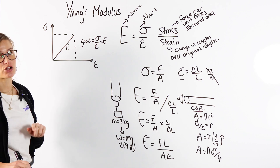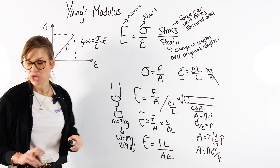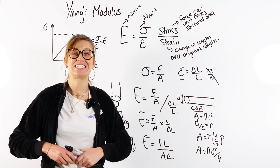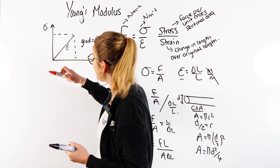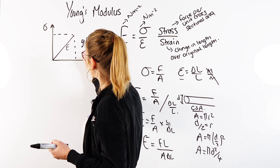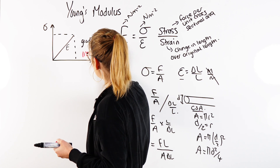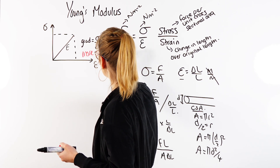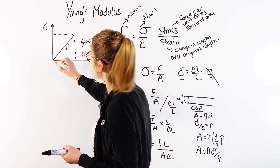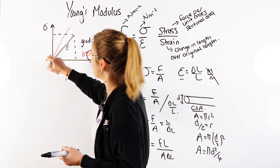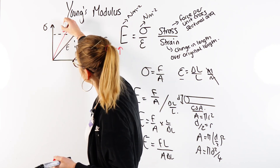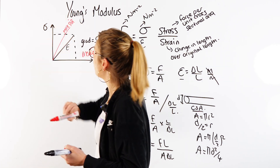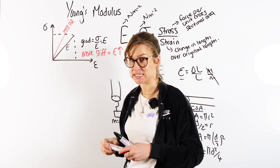If the question asks you to draw a line on the graph that represents a more stiff material, another way of saying that is a material with a higher value of Young's Modulus. All you would do is draw a line with a steeper gradient, and that represents a stiffer material or a greater value of Young's Modulus.